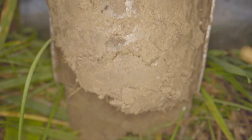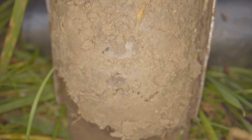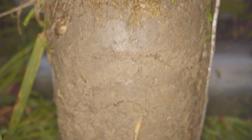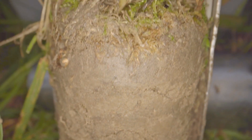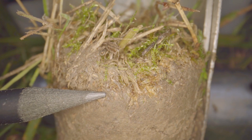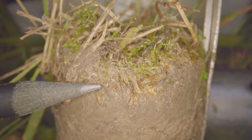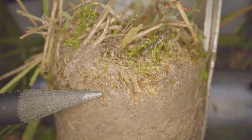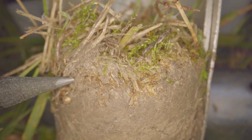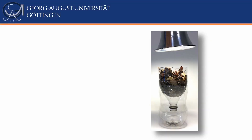Bring your collected material to the institute and we will do the following extraction steps so that you can use your own material during the course. Alternatively, you can do the soil animal extraction for a small sample at home. At the end of the video you will find some helpful links. The most common way to extract the tiny soil animals from the soil matrix is to use a Berlese funnel. The idea is simple.